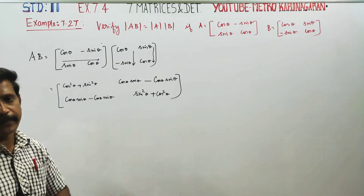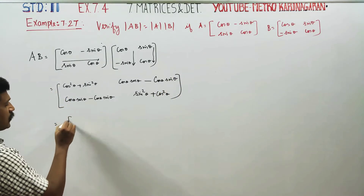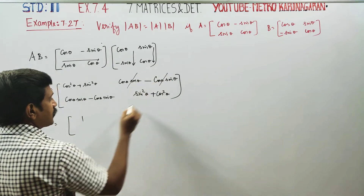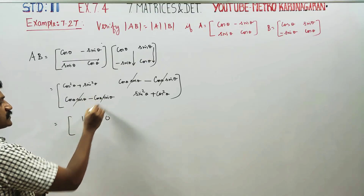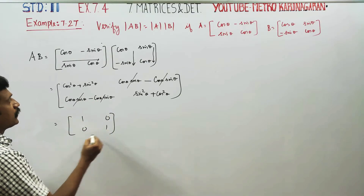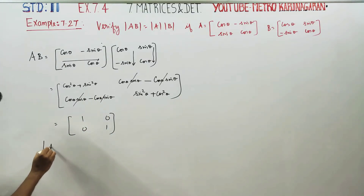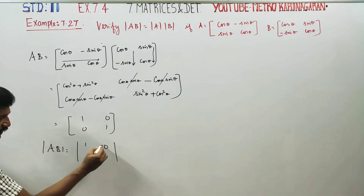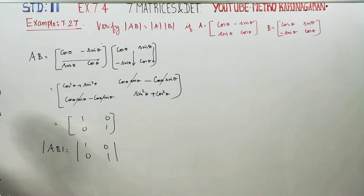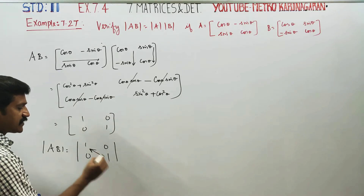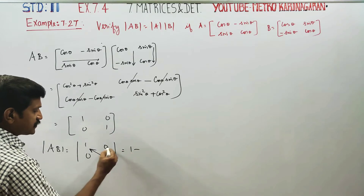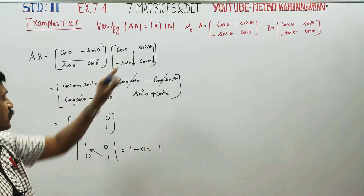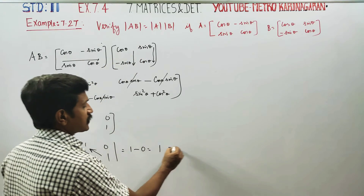The resulting AB matrix gives us the identity-like result. The determinant of AB: right-hand side equals left-hand side. The answer is 1. So the determinant of AB equals 1.